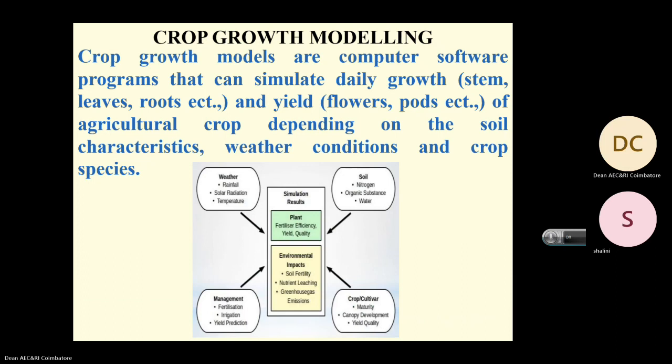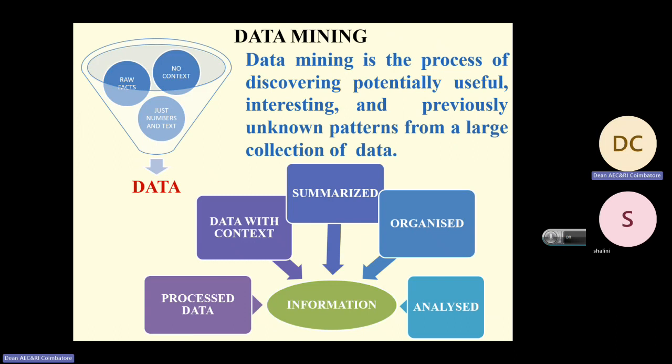Crop growth models are computer software programs that can simulate daily growth — including growth of stem, leaves, roots, yield, flower pots, etc. — of agricultural crops depending on soil characteristics, weather conditions, and crop species.